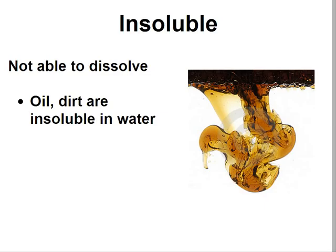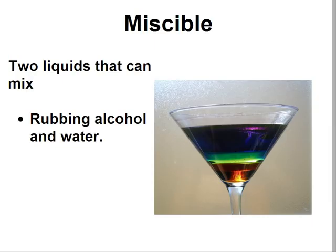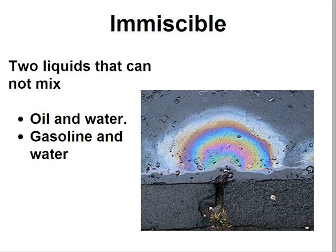Two other key words are miscible and immiscible. Miscible means that two liquids can mix — examples include rubbing alcohol and water, and hydrogen peroxide and water. Immiscible means two liquids that cannot mix. Oil and water, and gasoline and water, are examples of immiscible substances. The picture to the right shows a gasoline stain on a wet street — as you can see, it forms different layers and is clearly not miscible. Therefore, gasoline and water are immiscible.